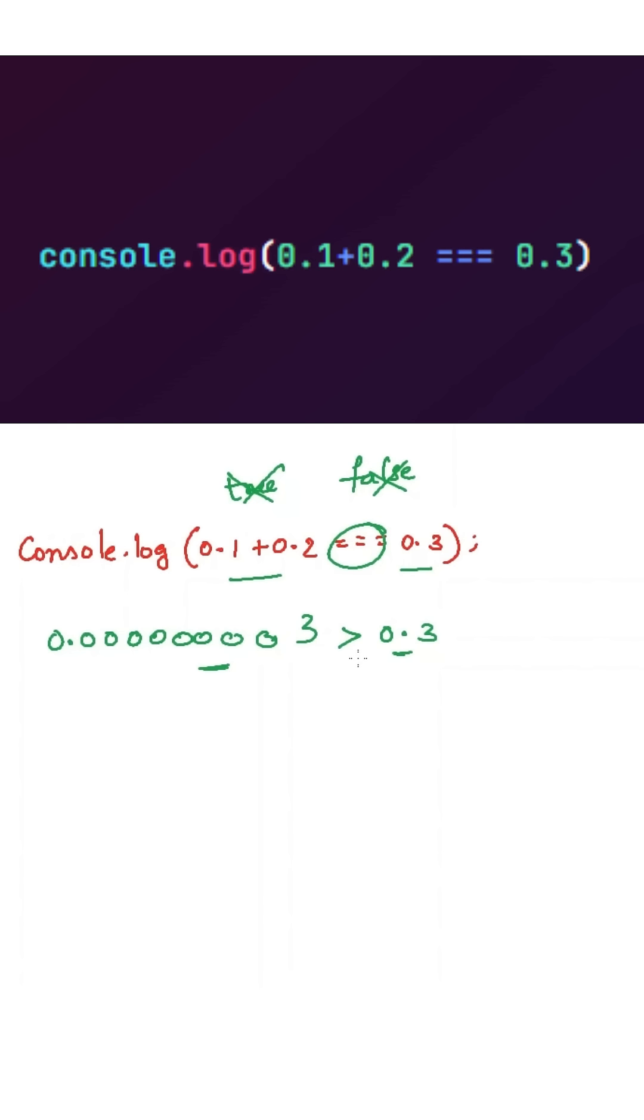Now interviewer will ask me a question that how to compare this floating point values then. We need to use epsilon value. So you need to create some variable called epsilon and you need to assign some small tolerance value to this. It can be approx 0.00001.